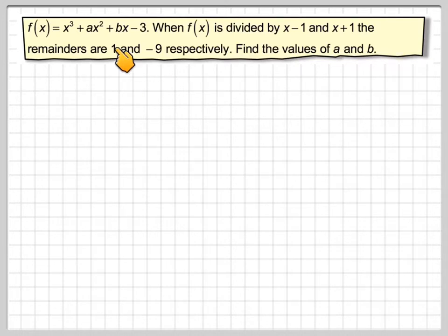So basically we've got to use this information to find the value of this coefficient here and this coefficient here. So if we write down our polynomial f of x: x cubed plus ax squared plus bx minus 3.